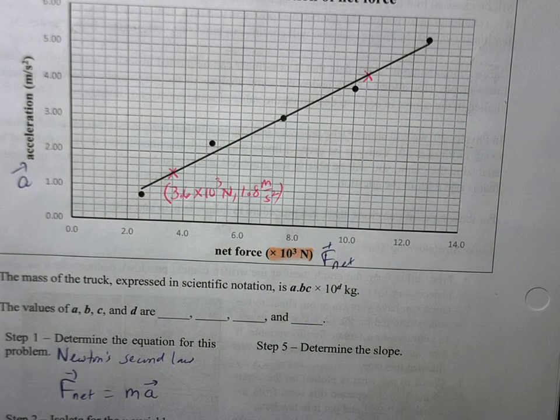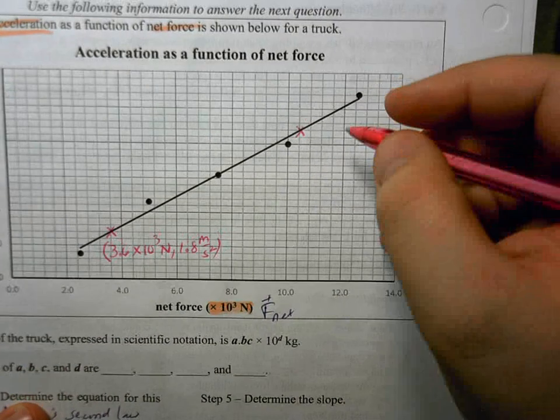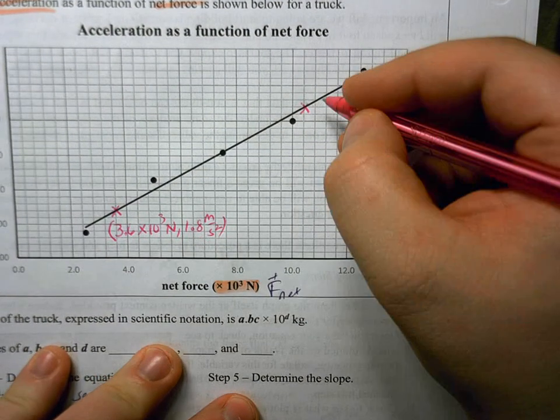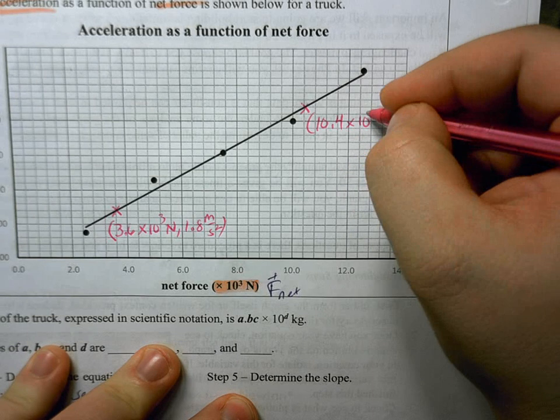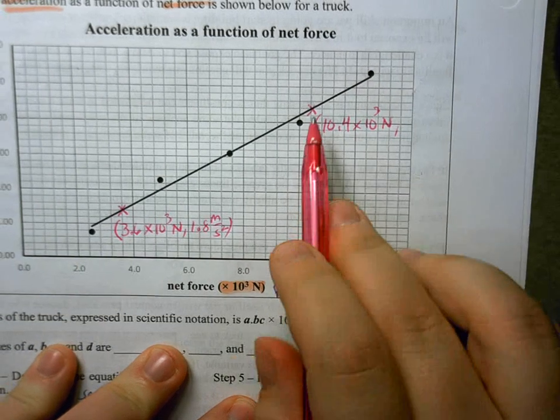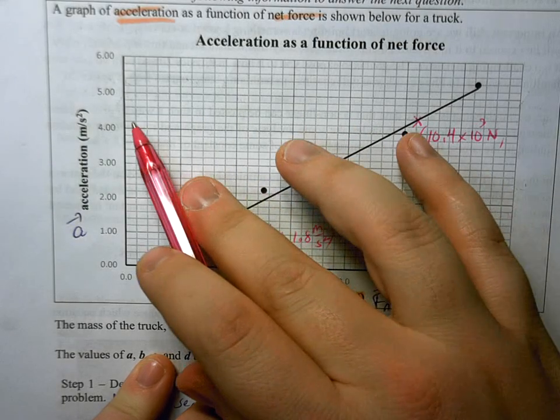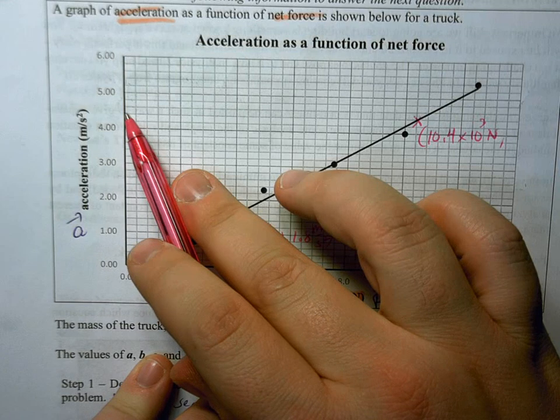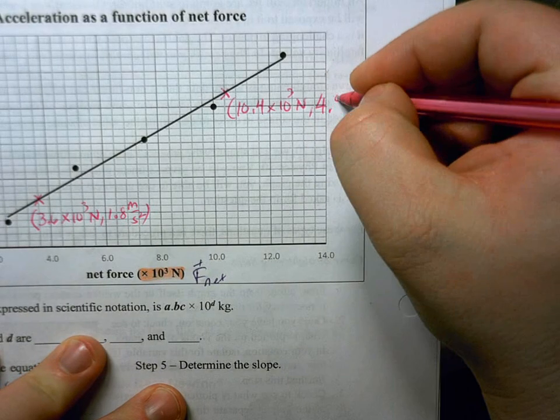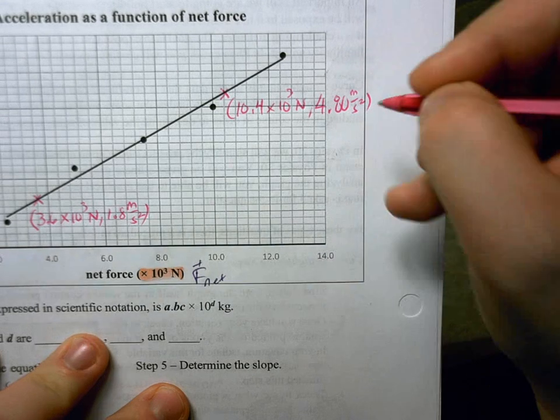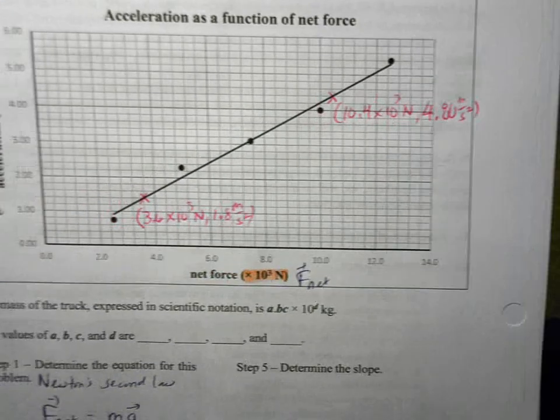Next part, our next point. So I've got this point way up here. This is going to be located at about 10.4 times 10 to the 3 newtons. And then this has an acceleration if I go back. Each of these spacings represents 0.4 meters per second squared. So this should be about 4.80 meters per second squared. So I have two data points.